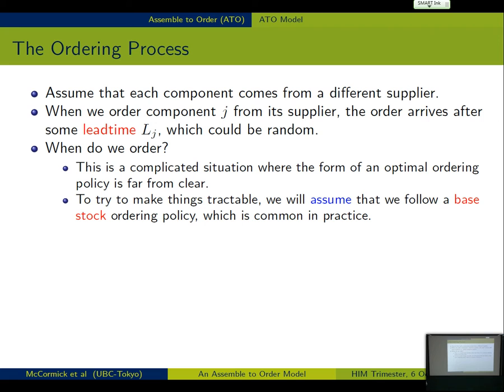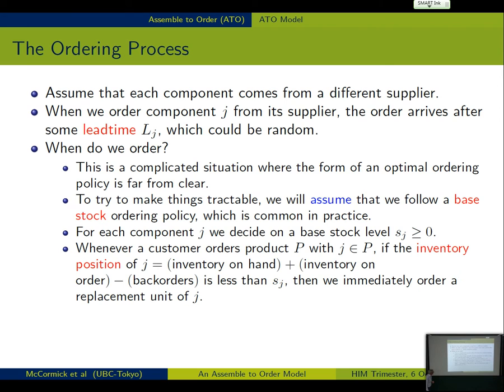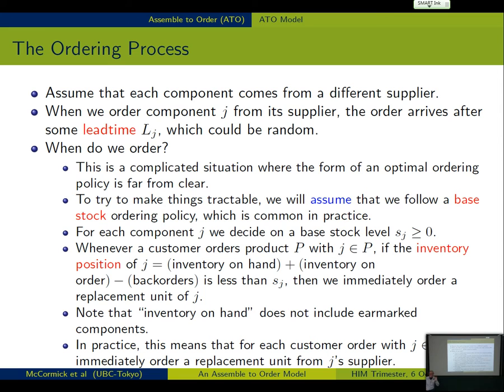Not actually known that this is going to be optimal, but this is the only way, apparently, to make the problem tractable. So our decision variable for each component, we're going to decide on its base stock level, S sub J. Those are our decision variables. So then whenever a customer orders a product where component J belongs to the product, the inventory position is smaller than the base stock, then we immediately order a replacement unit. So inventory on hand does not include the earmarked components. So in practice, this means it's a sort of one-for-one kind of thing. That as soon as an order comes in, we immediately order a replacement from the customer.